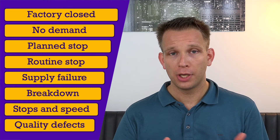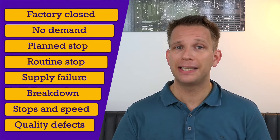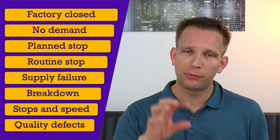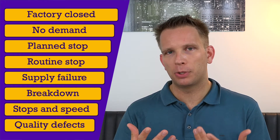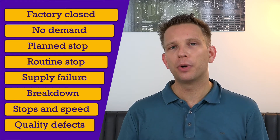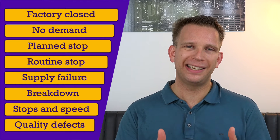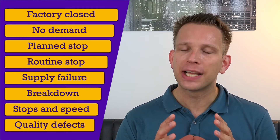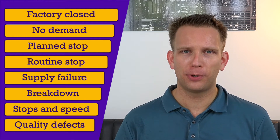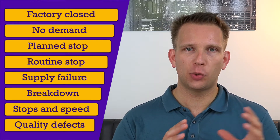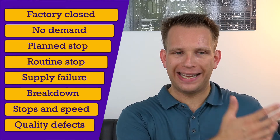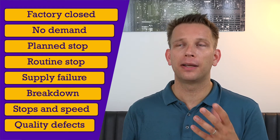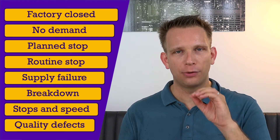Then we have our short stops and speed losses, often called performance losses. A speed loss is when the operator puts the line at a lower speed than the norm. Short stops are those very small interruptions that the operator can quite easily solve during production. The last category is quality defects, which depends quite a lot on how your process is laid out, what type of product you are making, and whether you can readily detect a quality defect. Dragging in data a couple of days later when you know there was a defect is usually not worth the trouble, because it will not give your operator the information and focus they need right now to run the lines smoothly.